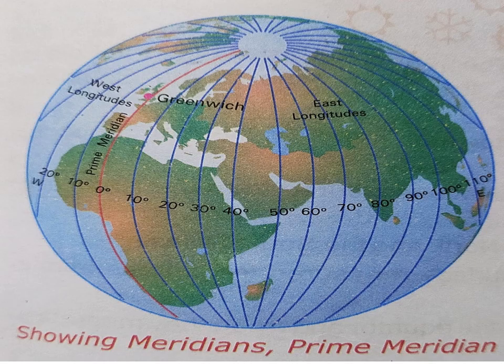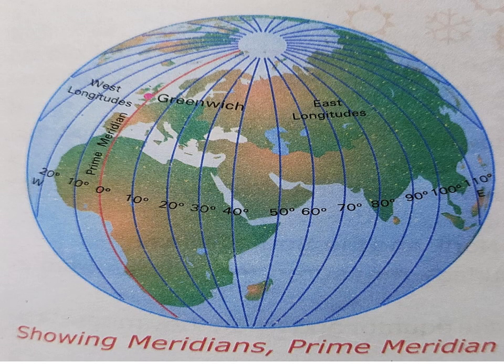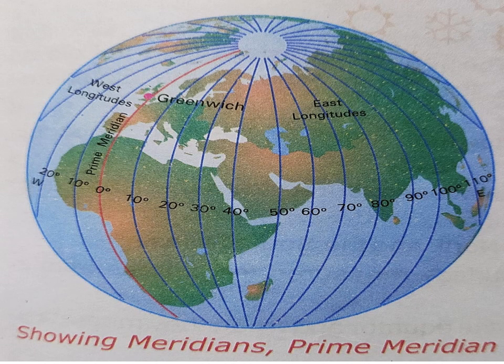Greenwich is a place near London and is called the prime meridian. The longitude of a place is measured east to west of the prime meridian. Moving away from the prime meridian towards the east or west, we reach halfway around the earth at 180 degrees. There are 180 meridians towards the east and 180 meridians towards the west of the prime meridian. Those towards the east are marked with E, and those towards the west are marked with W.